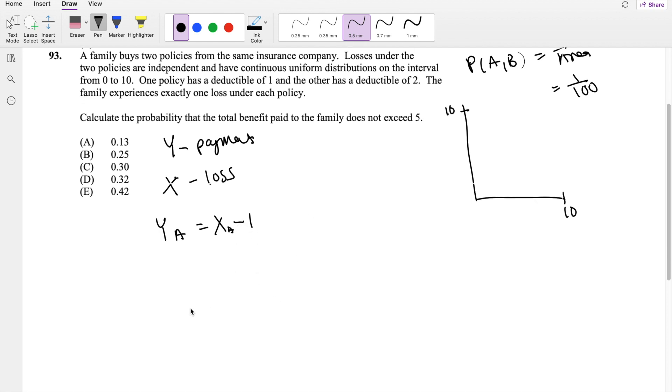Y_A equals X_A minus 1. And likewise, Y_B, the payment of B, is equal to X_B, the loss of B minus 2, and this one has a deductible of 2. And they only have one loss under each policy. That makes it so much more simpler.